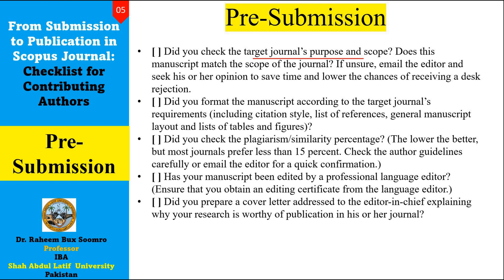For pre-submission, first you have to check: did you check the target journal's purpose and scope? If yes, that's wonderful. Then see whether your title or your research manuscript is matching with the purpose and scope of the journal you are considering for submission. If you are unsure, it is better to send an email to the editor and get it verified whether you can submit your paper there or not. Editors may guide you or provide an alternative research journal if your paper is not suitable for their scope.